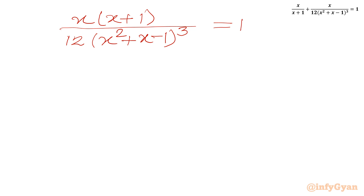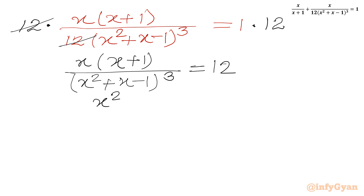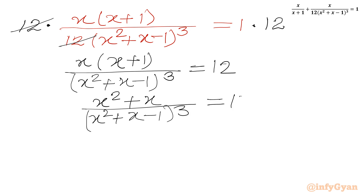Now we will multiply both sides by 12. This 12 cancels, and we get x times (x plus 1) over (x squared plus x minus 1) cubed equal to 12. We can write x squared plus x in the numerator.